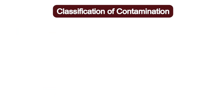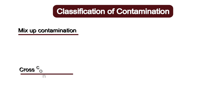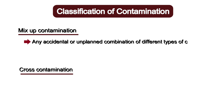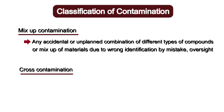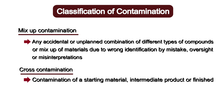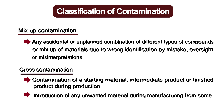Contamination can be classified in different ways. It can be classified into mix-up contamination and cross-contamination. Mix-up contamination is any accidental or unplanned combination of different types of compounds or mix-up of materials due to wrong identification by mistake, oversight or misinterpretation. Whereas cross-contamination, according to WHO, is defined as the contamination of a starting material, intermediate product or finished product during production. Introduction of any unwanted material during manufacturing from one process to the next is also termed as cross-contamination.